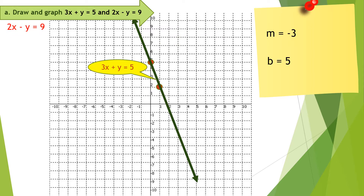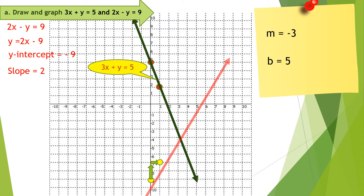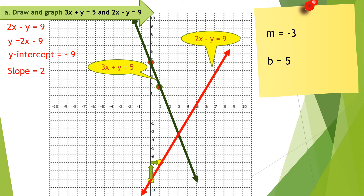The second equation is 2x minus y equals 9. The slope-intercept form is y equals 2x minus 9. The y-intercept is negative 9, so let us plot negative 9. The slope is positive 2, so the change in y is positive 2 and the change in x is 1. This is now the graph of our second equation, 2x minus y equals 9.